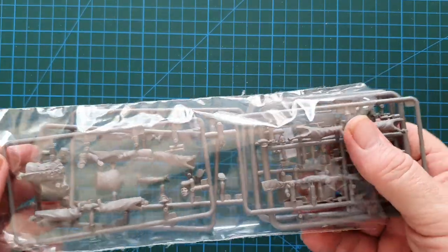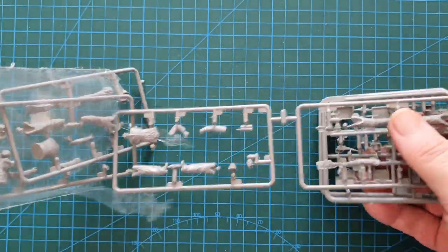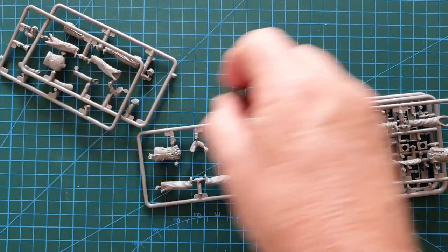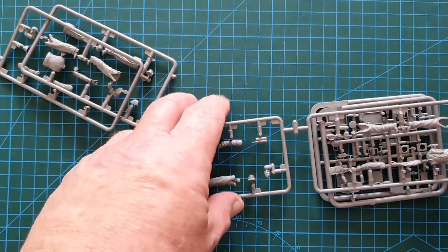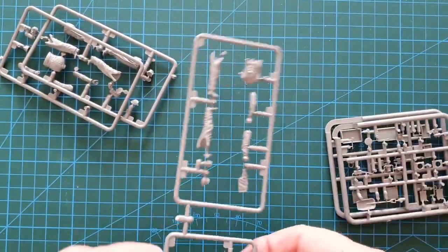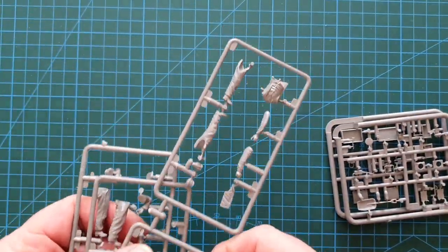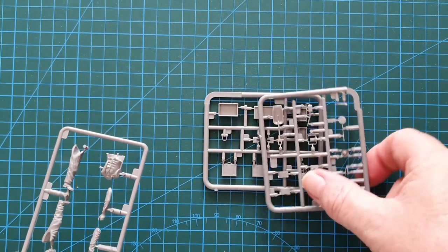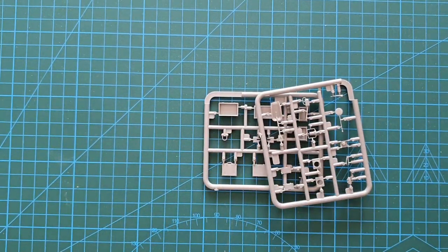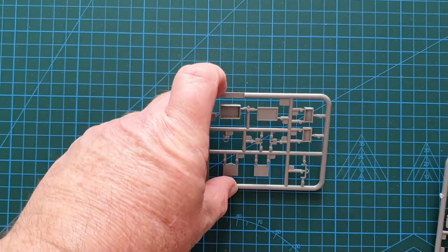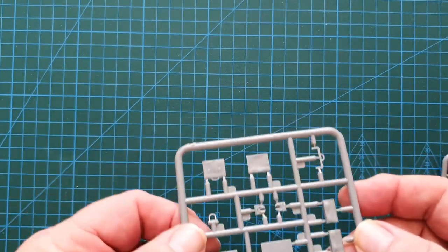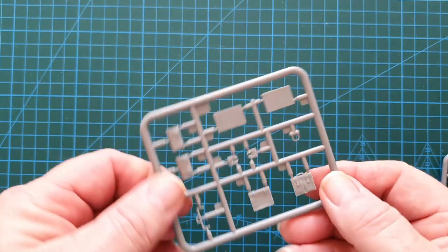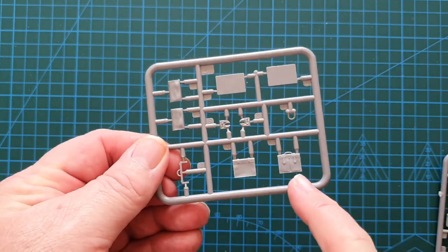So one bag of sprues, I've already had a look at this one. There was a loose torso in the bag. You've got three sprues for the figures and two sprues for the accessories. Let's put the figures aside and let's have a look at the accessories first. This is your options - this is the briefcase.